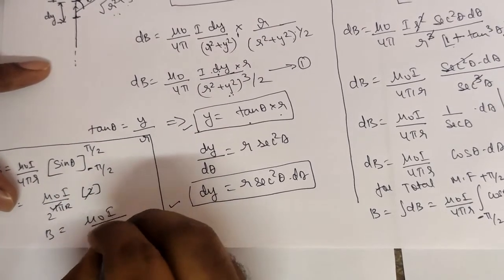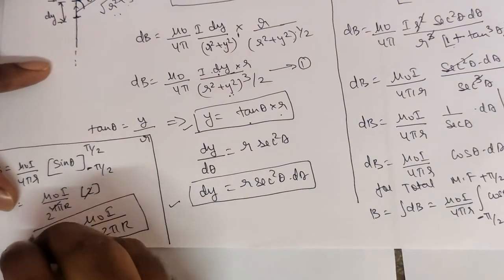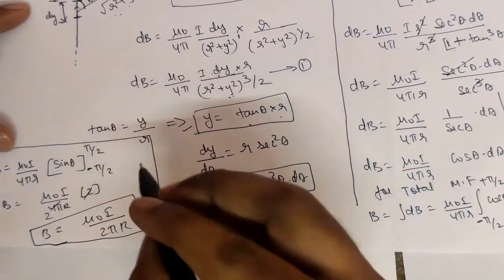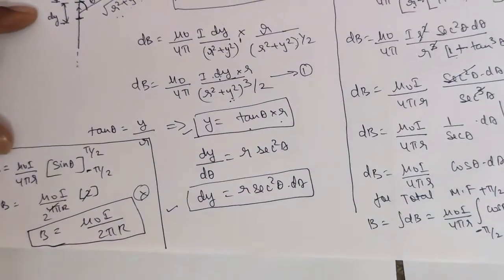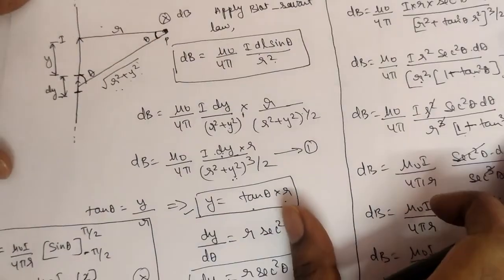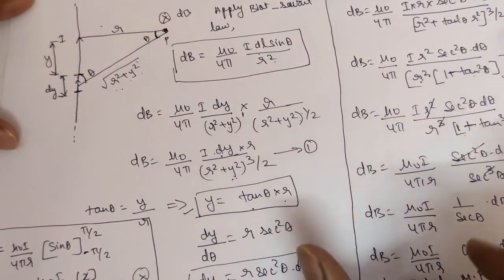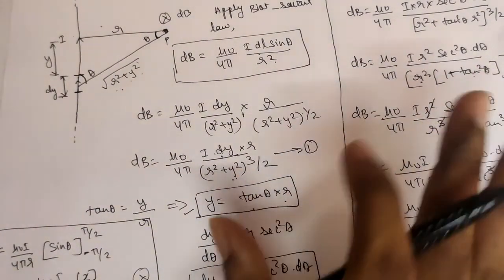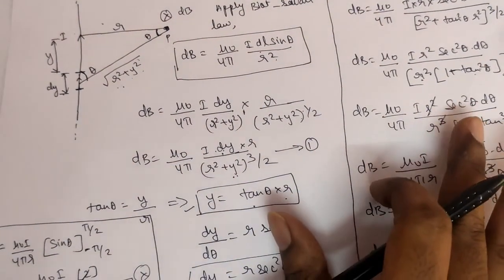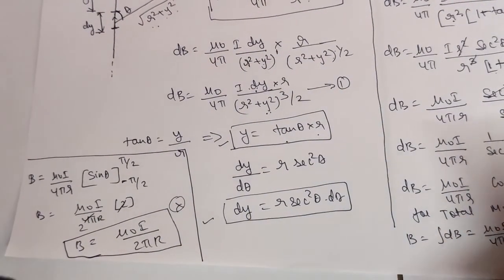Therefore the final result is B = μ₀·I / 2π·r. This is the magnetic field induction due to an infinitely long current-carrying wire. This same result can also be derived more quickly using Ampere's Circuital Law, which is the shortest possible way to solve for the magnetic induction due to a long straight current-carrying wire.